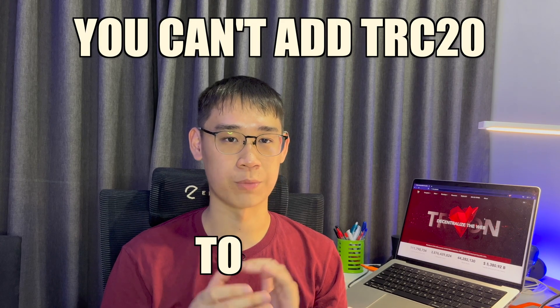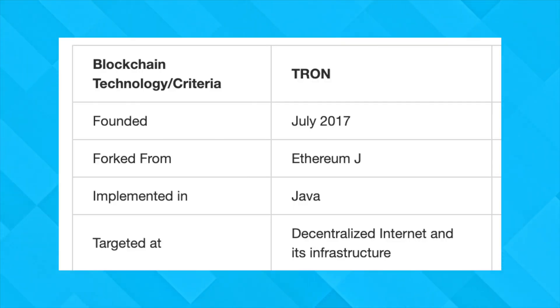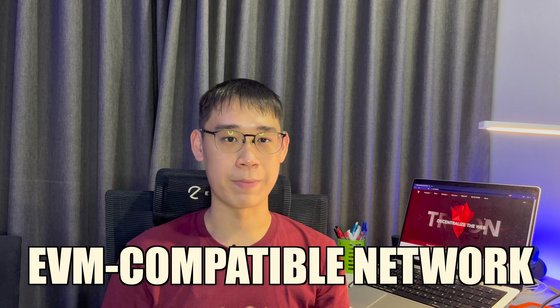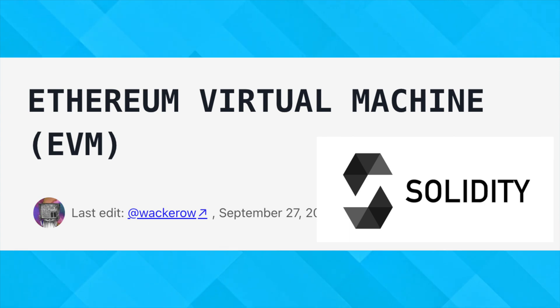However, you can't add this network to your MetaMask wallet, and here's the reason why. The TRC20 network uses the Tron Virtual Machine and is built using the Java programming language. This is different from an EVM compatible network, which uses the Ethereum Virtual Machine and the Solidity programming language.